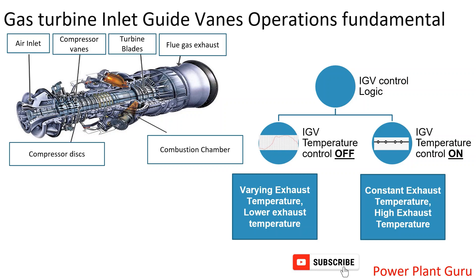The maximum exhaust temperature maintained is around 580–590°C for a Frame 9 gas turbine, and 560–570°C for a Frame 6 turbine. Higher temperature means higher steam generation in the HRSG, higher steam generation means higher power generation in the steam turbine generator in a combined cycle plant. So IGV temperature control mode ON increases the overall efficiency and power output. Before switching to this mode, you should check the history of IGV operation and past maintenance records.